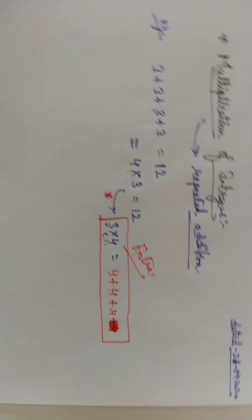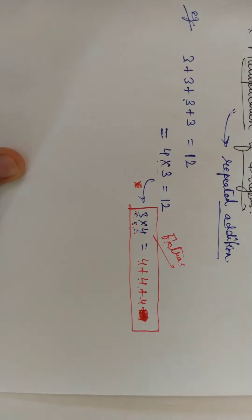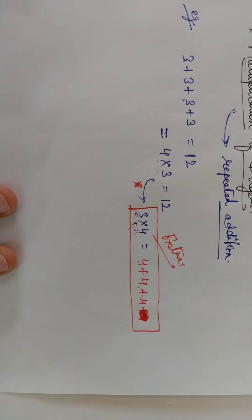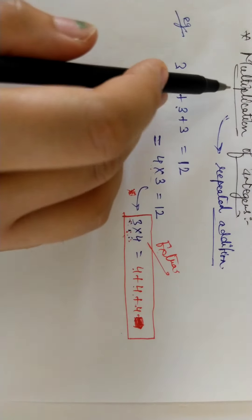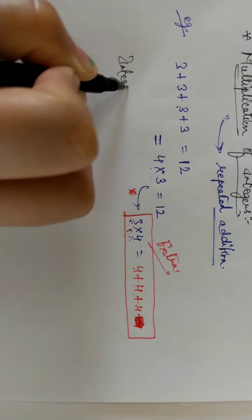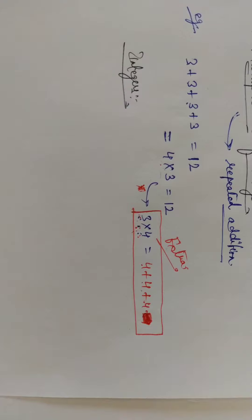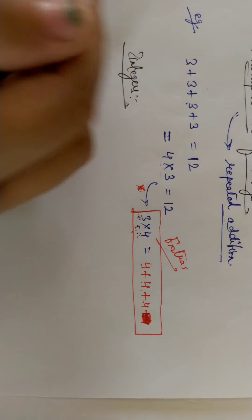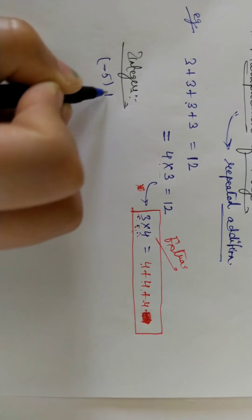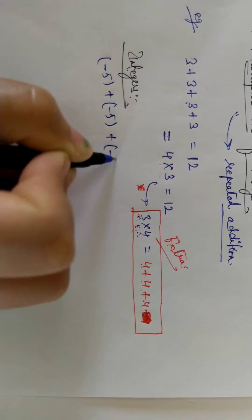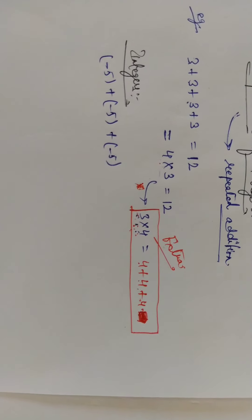So what we were doing: multiplication of integers — multiplication is repeated addition. I told you about natural numbers using an example. Now if you look at multiplication with integers, what is repeated addition? For example, if you have minus 5 plus minus 5 plus minus 5 — that is minus 5 added 3 times.